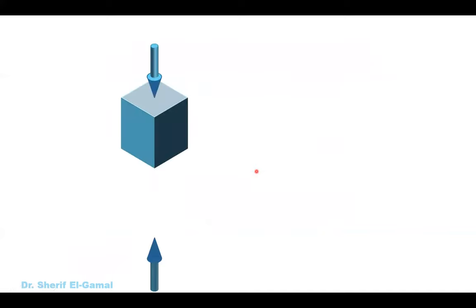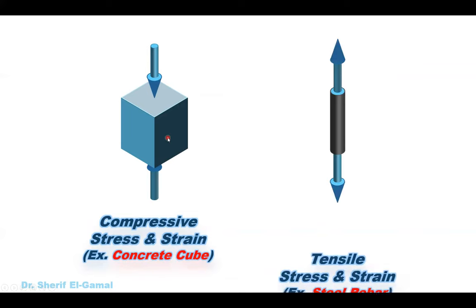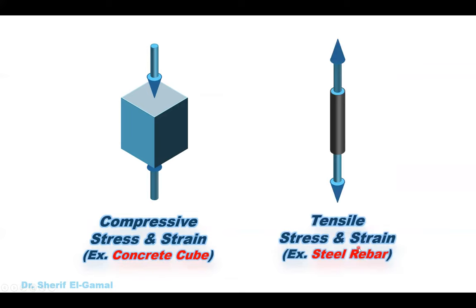Stress and strains can be compressive if we have a compression force — for example, a concrete cube under compression force. And they can also be tensile stresses and strains — for example, steel bars under tension force, where we have tensile stresses and tensile strains in the bars.